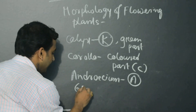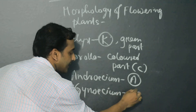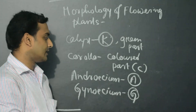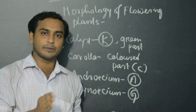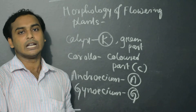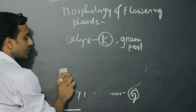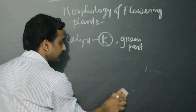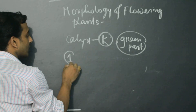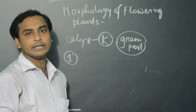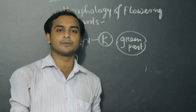Gynoecium is the female reproductive part of a flower, and its symbol is G. Now, Calyx is the outermost whorl of a flower, which is green in color. It is responsible for photosynthesis. It is green in color and is the outermost part.